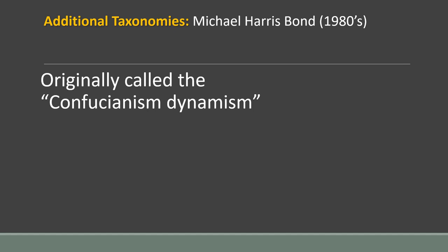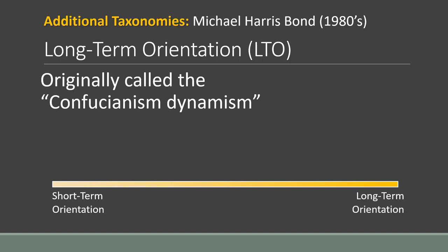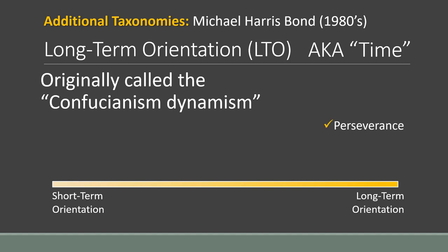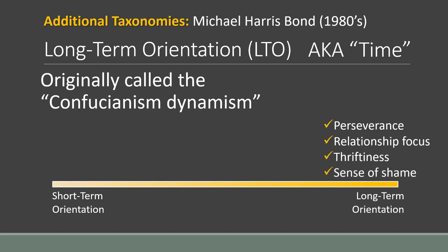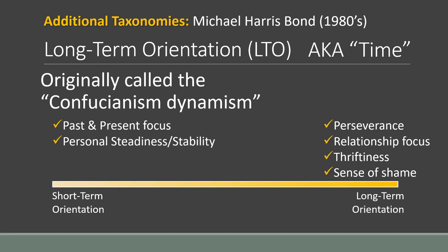Later the dimension was renamed Long-Term Orientation, or LTO, sometimes referred to as the Time dimension. You can think of this as the difference between living in the moment and planning for the future. On the Long-Term Orientation side, the focus is on perseverance, attention to your most important relationships, being thrifty and saving for the future, and having a sense of shame. The flip side is Short-Term Orientation, focusing on the present and the past: personal steadiness and stability, respect for tradition, saving face, and reciprocating greetings, favors, and gifts. Do it now, because you don't know what the future will bring.